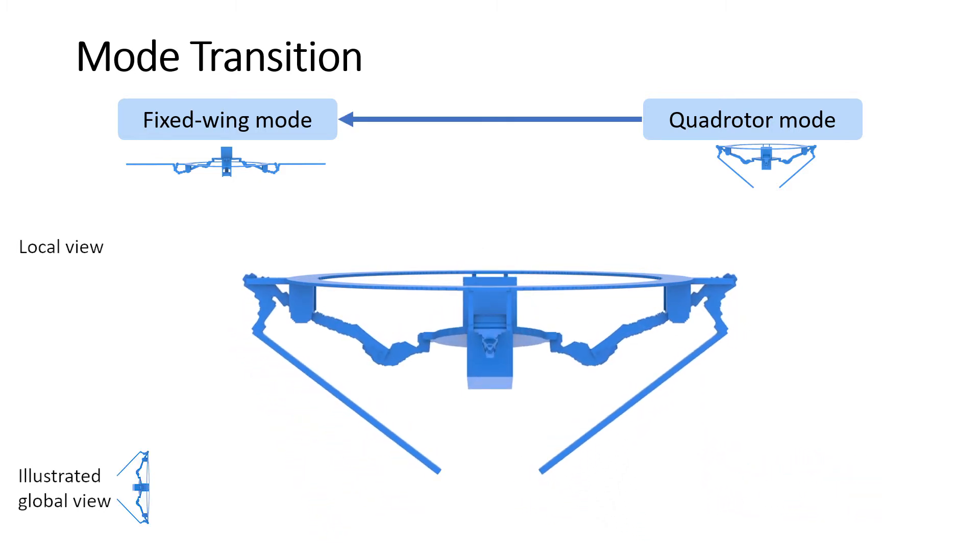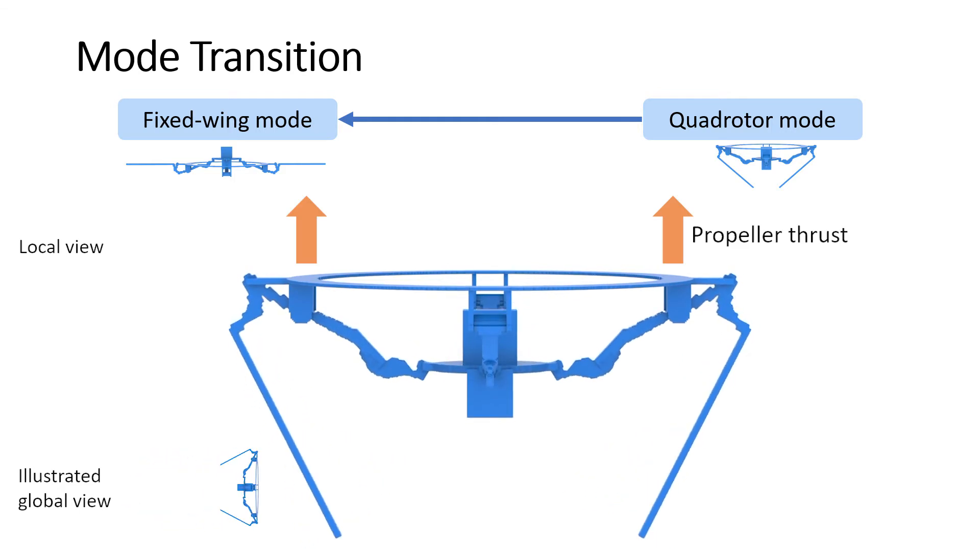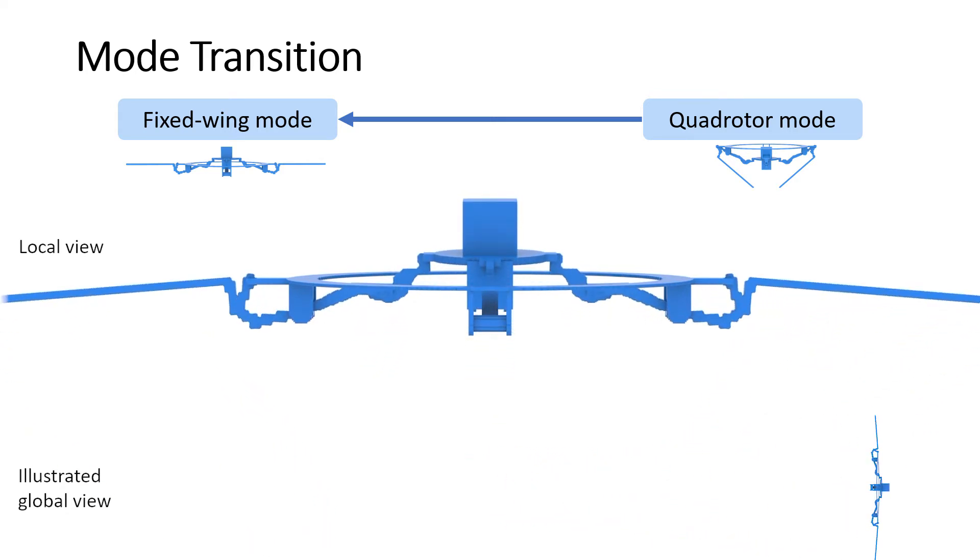To transition from quadrotor mode to fixed-wing mode, we accelerate the ring again. Energy is temporarily stored in the compliant arms. After the propellers stop outputting thrust, this energy is released to bounce the central mass from the quadrotor mode to the fixed-wing mode.